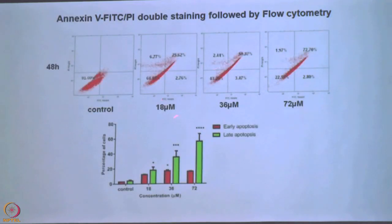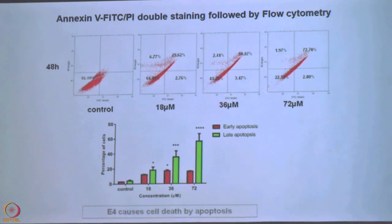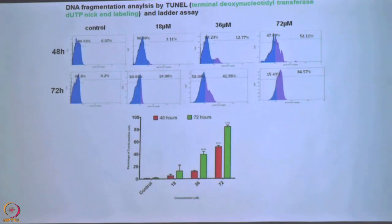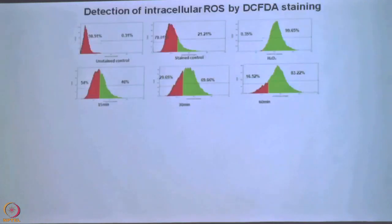Quickly do apoptosis — with increasing concentration you are able to go to late apoptosis more. This is working in a time- and dose-dependent manner. E4 causes cell death by apoptosis. Next experiment: DNA fragmentation — run the gel or do TUNEL assay, and you can see DNA fragmentation is also going up at higher concentrations. So the mode of action: E4 causes apoptosis by DNA fragmentation in a dose- and time-dependent manner, even without binding to DNA.